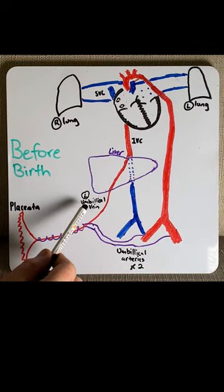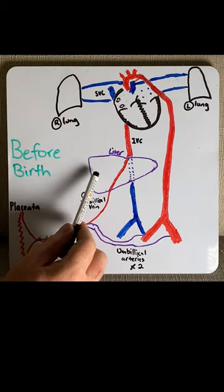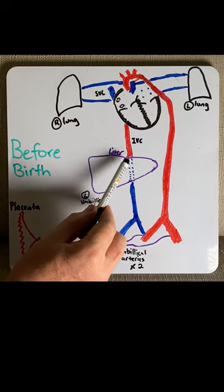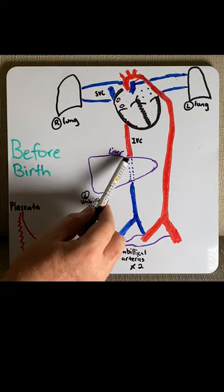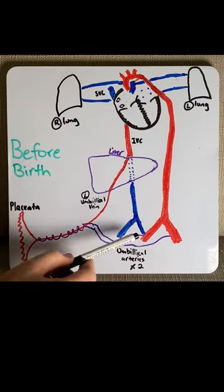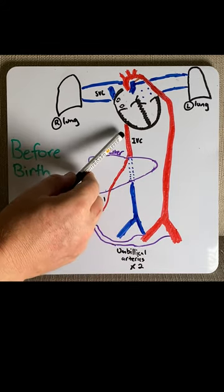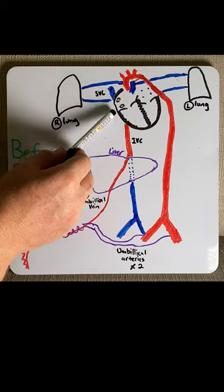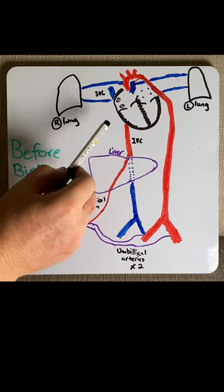Because this blood is already oxygenated, it doesn't need to be filtered in the liver. Therefore, it's shunted through the liver via the ductus venosus. Here this blood enters the inferior vena cava, which drains the legs and abdomen, and continues into the heart at the right atria.